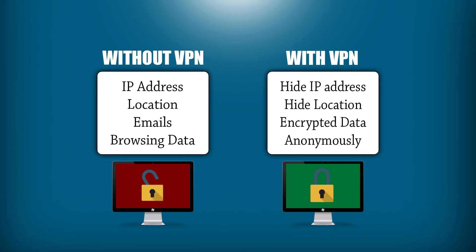With a VPN you can hide your IP address, hide your location, encrypt your data, and ultimately browse and surf the internet anonymously, avoiding any type of government censorship. Without a VPN, your IP address is exposed, your location is exposed because ISPs assign IP addresses based on geographical location, and your emails, browsing information, and browsing history are not encrypted or hidden because you are on an unsecured line.